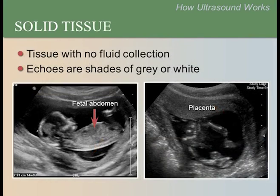Unlike cystic tissue, solid tissue has no fluid and will therefore reflect some echoes. While cystic tissue appears black, solid tissue will appear gray or white. The left image shows the fetal abdomen and the right image shows a placenta — both are shades of gray or white. Please also notice the fetal arms in the image to the right; the red lines trace the arms from the shoulder to the hands.